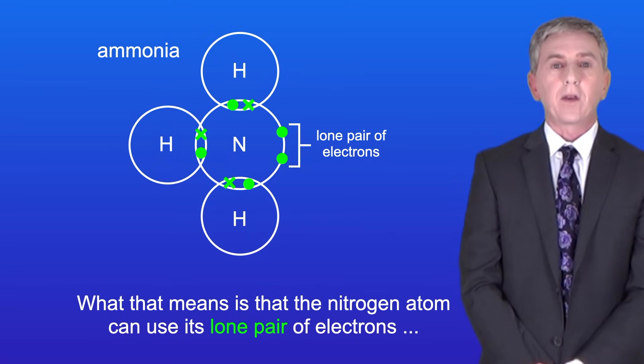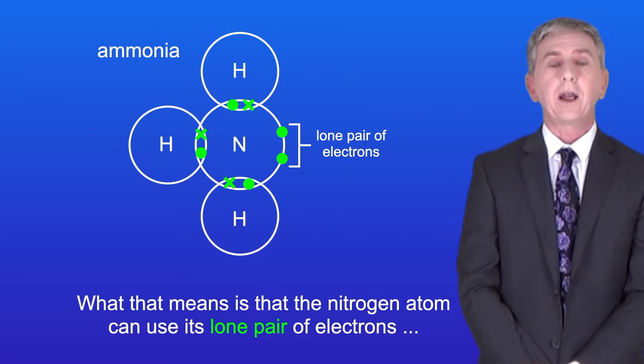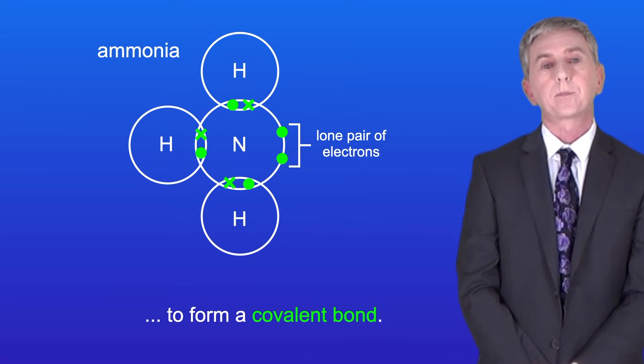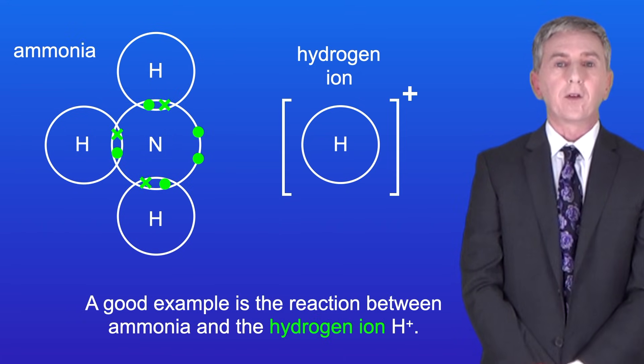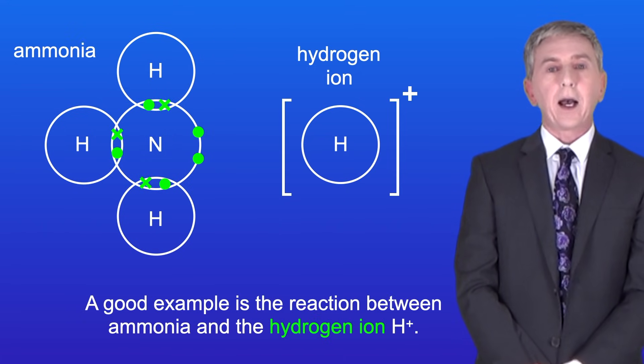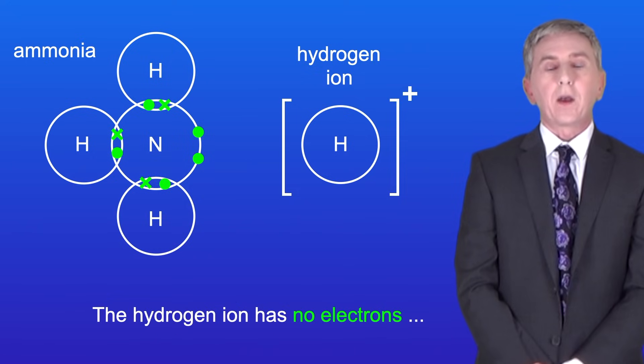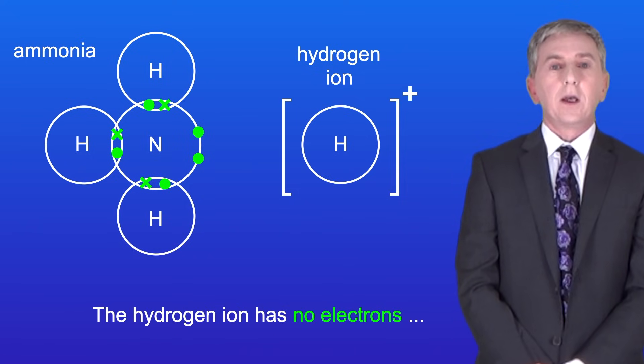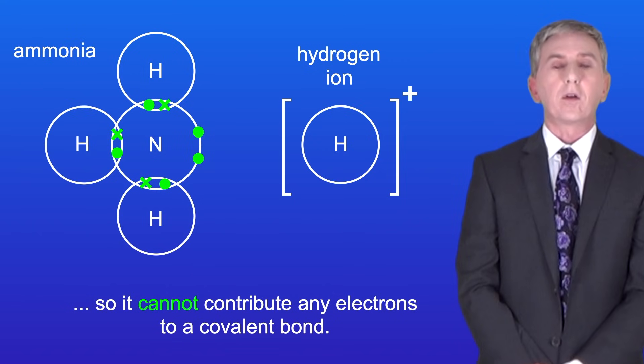So what that means is that the nitrogen atom can use its lone pair of electrons to form a covalent bond. A good example is the reaction between ammonia and the hydrogen ion H+. The hydrogen ion has got no electrons, so it cannot contribute any electrons to a covalent bond.